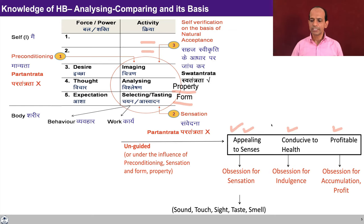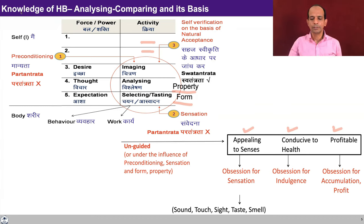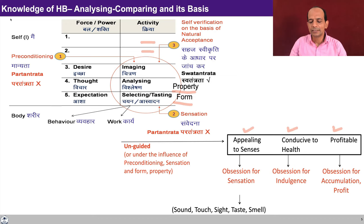The second kind of obsession is obsession for indulgence. If you try to consume something for happiness and want happiness in continuity, then the tendency to consume as much as possible leads to obsession. For example, if one feels that by having many houses or owning a lot of property one is going to be happy, one may go for accumulation. When the guidance from higher level activities is not available, the thought gets into this kind of analysis and comparing — on the basis of senses, whether conducive to health, and whether profitable. If unguided, these may lead into obsession for sensation or for accumulation and profit.